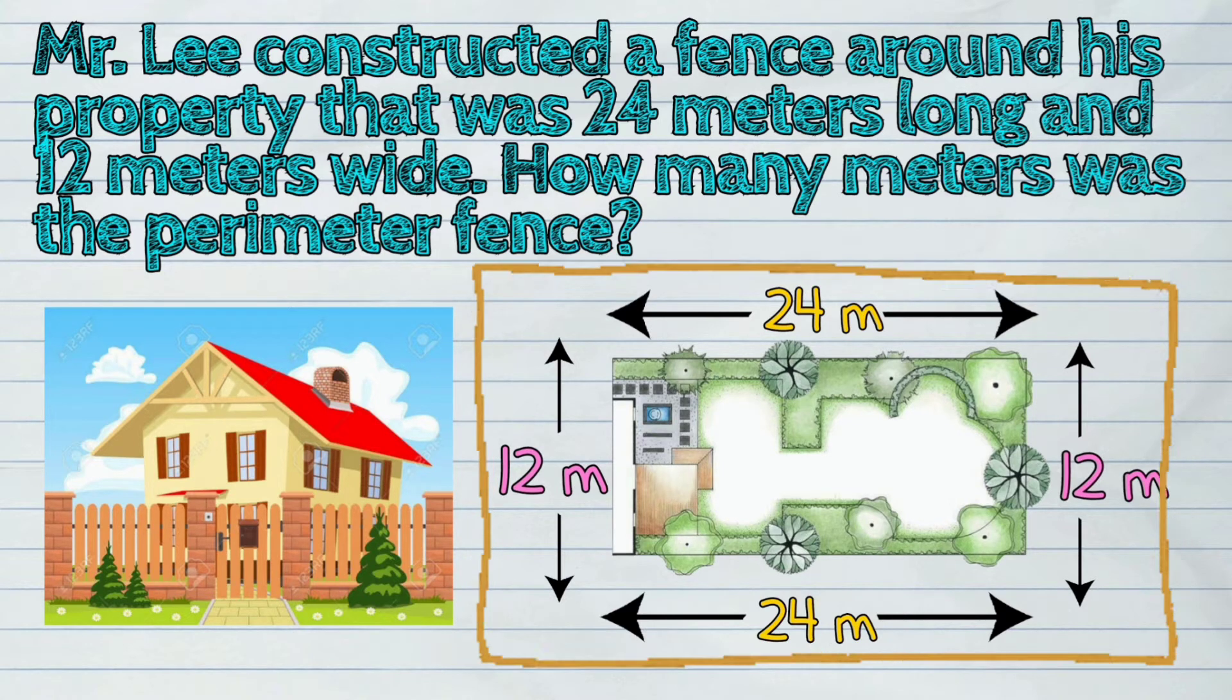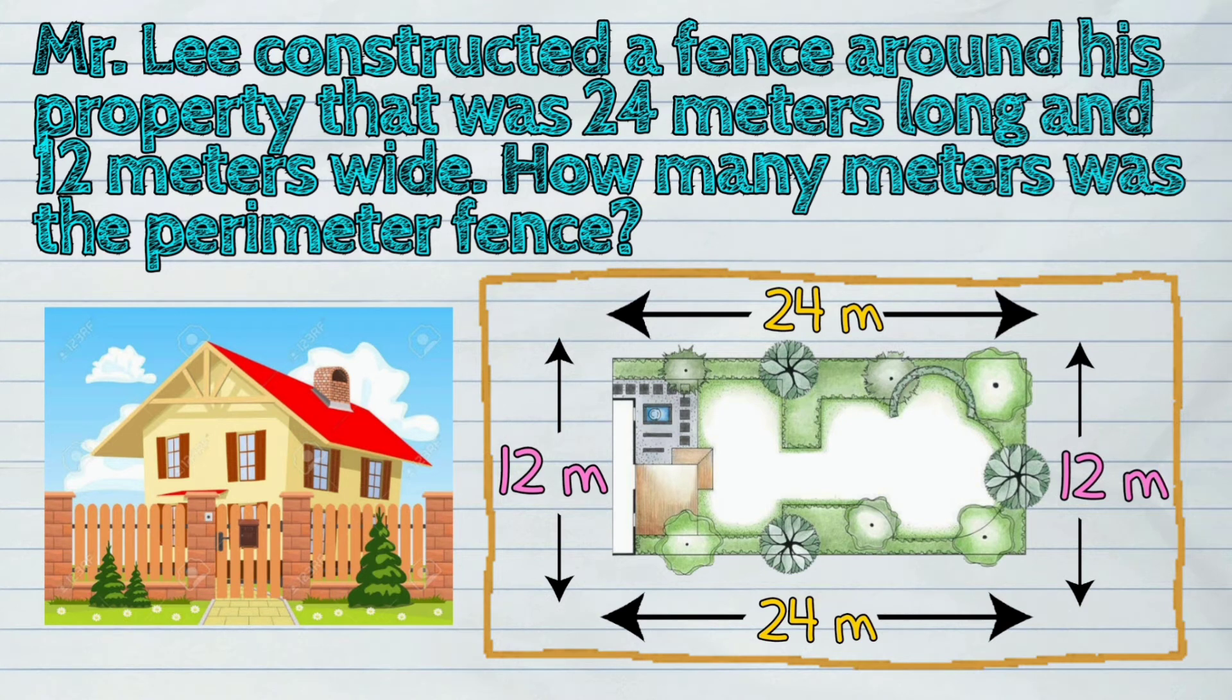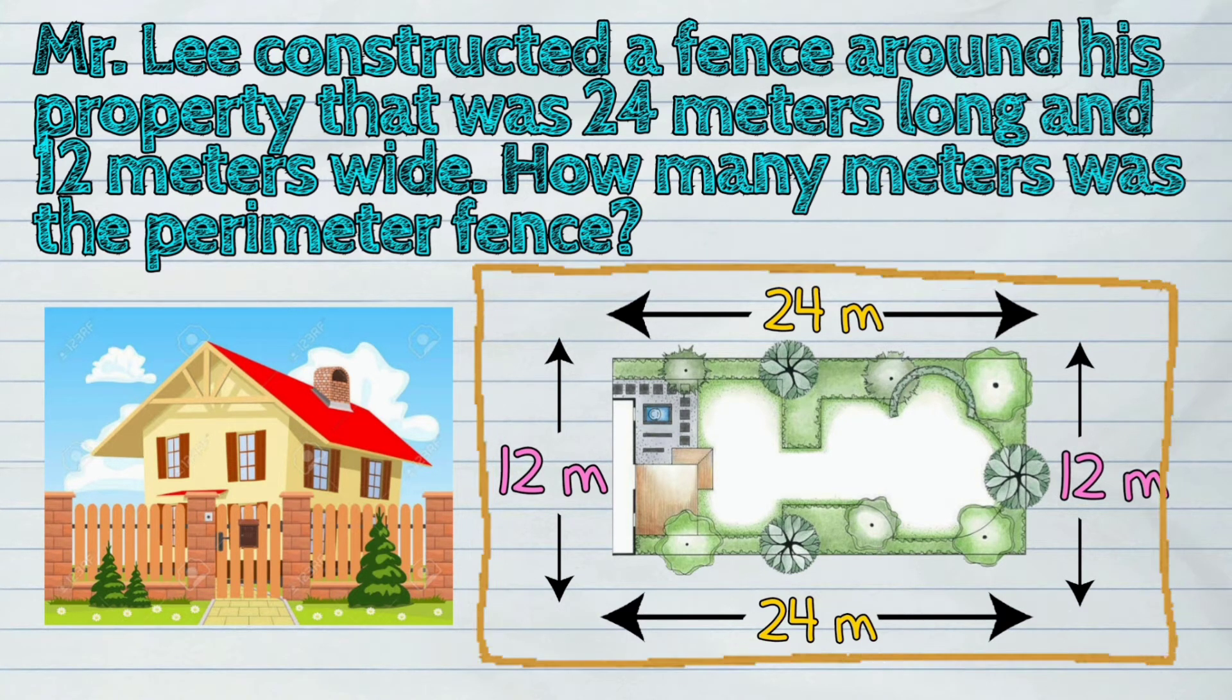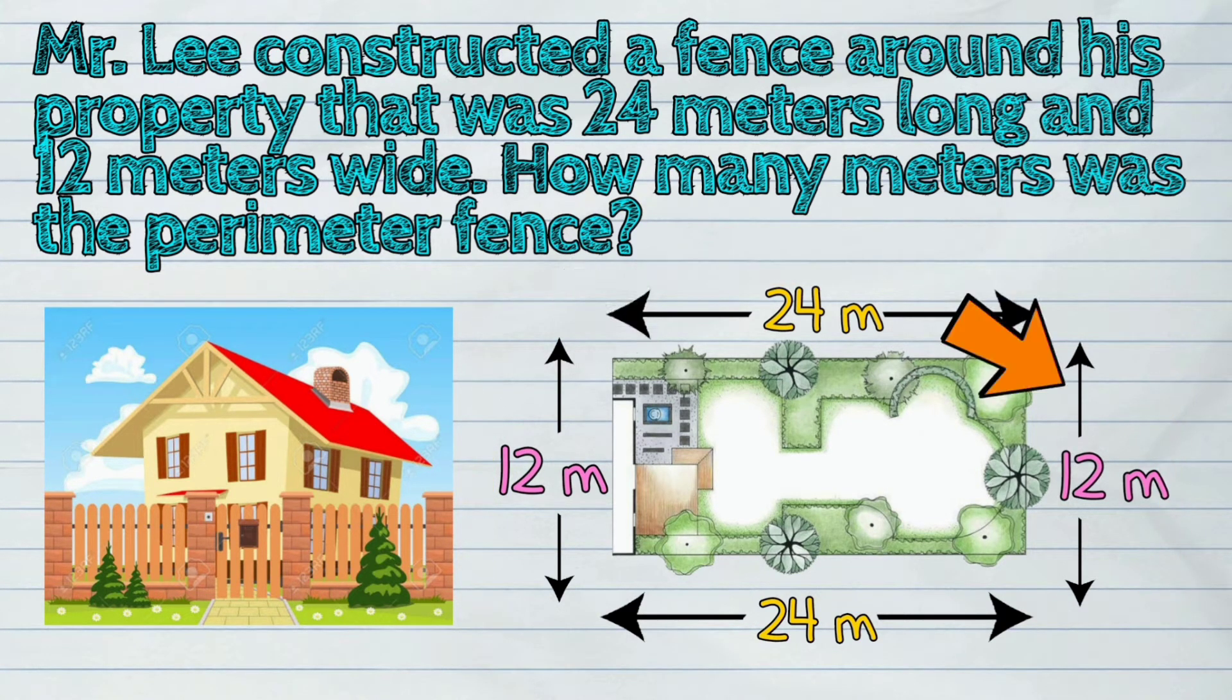This is a picture of Mr. Lee's property and the fence that was built around it. The distance around his property is its perimeter.